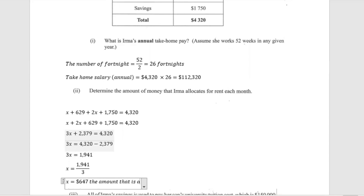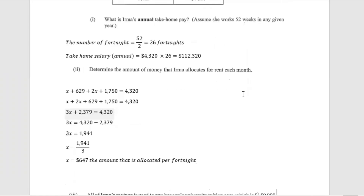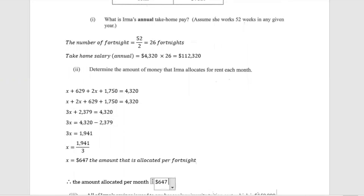x equals $647 is the amount allocated per fortnight. The question asks for the amount allocated for rent each month. Since there are two fortnights in each month, the amount allocated per month equals $647 multiplied by 2, giving us $1,294 per month. So Irma allocates $1,294 for rent each month.